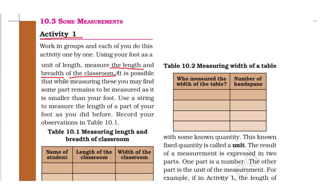Sometimes while doing this, there may be a part smaller than your foot that remains. In that case, use a string to measure the length of that part, just as you did before. Record your observations in Table 10.1. Use the string to measure the foot length as well, and record everything in Table 10.1 — 'Measuring Length and Breadth of Classroom.'